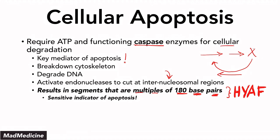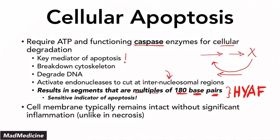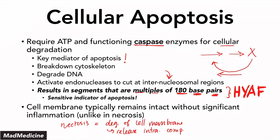One important thing to remember about cellular apoptosis is that cellular membranes actually stay intact. Unlike necrosis — in cellular necrosis, you have degradation of cell membranes, and when you degrade your cell membrane, you release intracellular components, which leads to inflammation. Cellular apoptosis does not have any inflammation associated with it because it's small-scale and the cell membranes remain intact, so the intracellular components that would cause local tissue inflammation are not being released — they stay inside the cell.